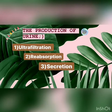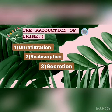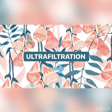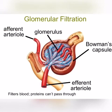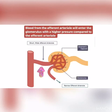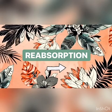The production of urine carried out by the nephron involves three processes: first, ultrafiltration; reabsorption; and also secretion. Ultrafiltration involves the Bowman's capsule and the glomerulus. Blood from the afferent arteriole, which is from the renal artery, will enter the glomerulus with a higher pressure, which is maintained by the bigger diameter of the afferent arteriole compared to the efferent arteriole.